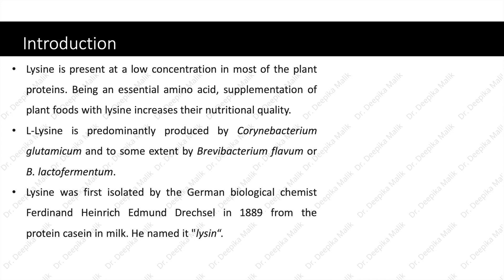L-lysine is predominantly produced by Corynebacterium glutamicum and to some extent by Brevibacterium flavum or Brevibacterium lacto-fermentum. Lysine was first isolated by the German biological chemist Ferdinand Henrich Edmund Dreschel in 1889 from the protein casein in milk. He named it lysine.